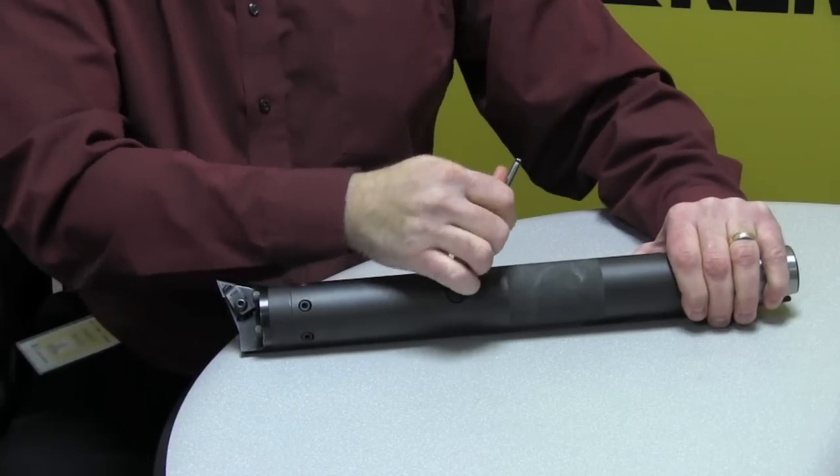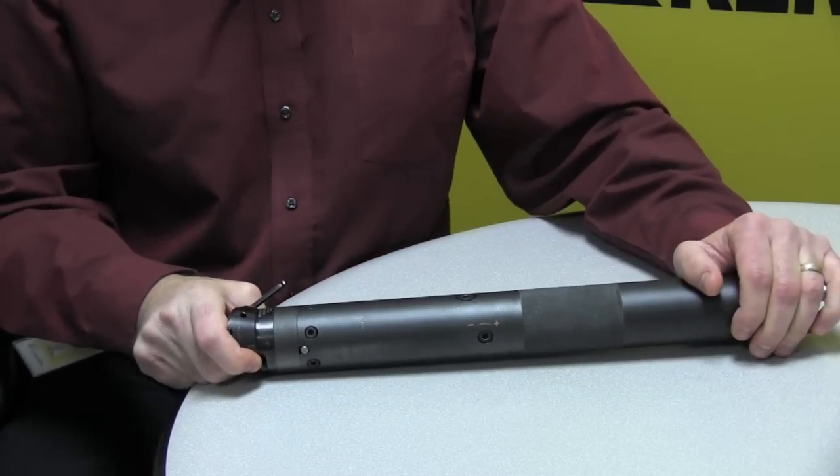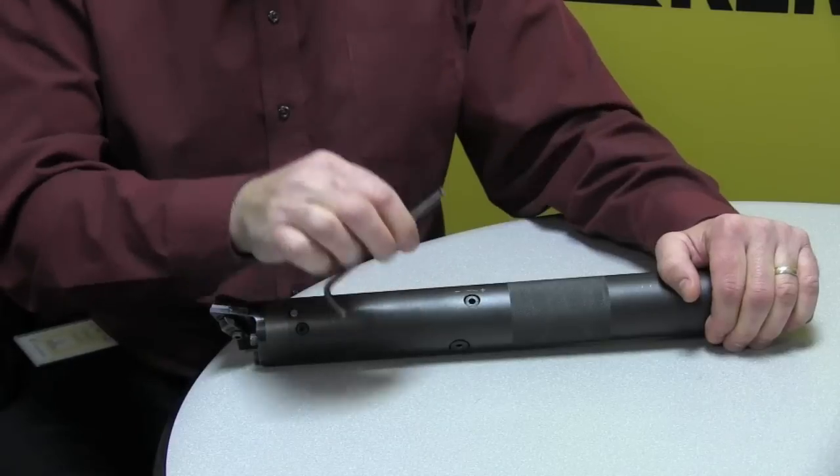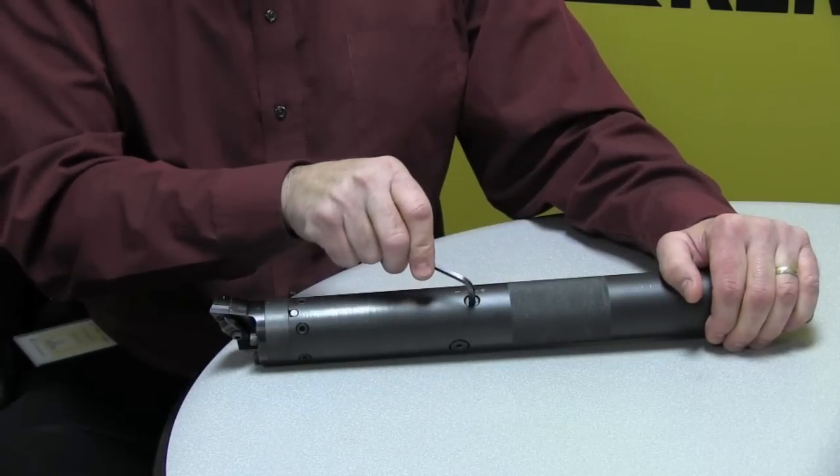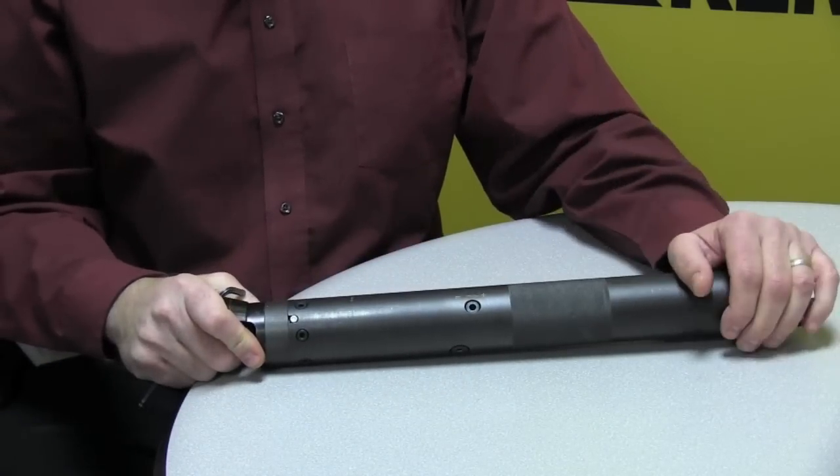Now once you start to get the chatter out and the noise starts to cut down, you may want to move this adjustment screw, maybe start with a quarter, go to an eighth of a turn, to fine tune it.